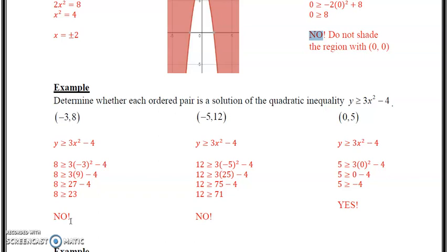If you determine whether the ordered pair is a solution, you're essentially testing whether or not it's basically what side you shade. So it's basically algebraically. Do the same thing with -5, 12. Again, you get 12 is greater than or equal to 71. You know, that's the case. And then the last one here, 0 and 5. 5 is greater than or equal to -4. So yes, that is.